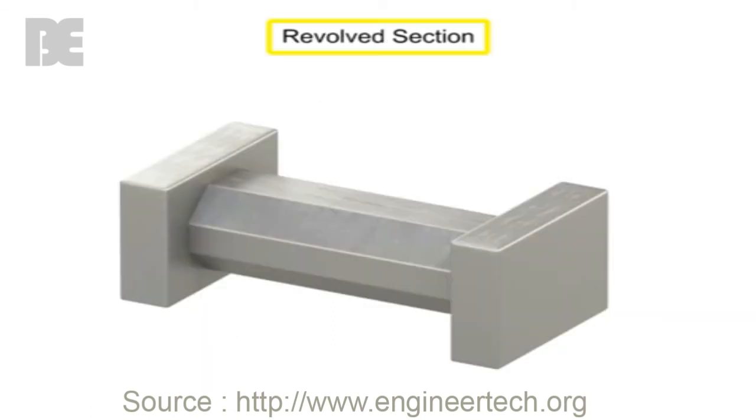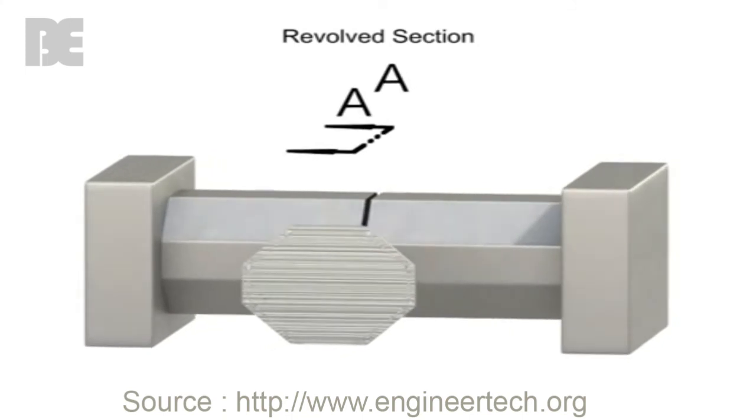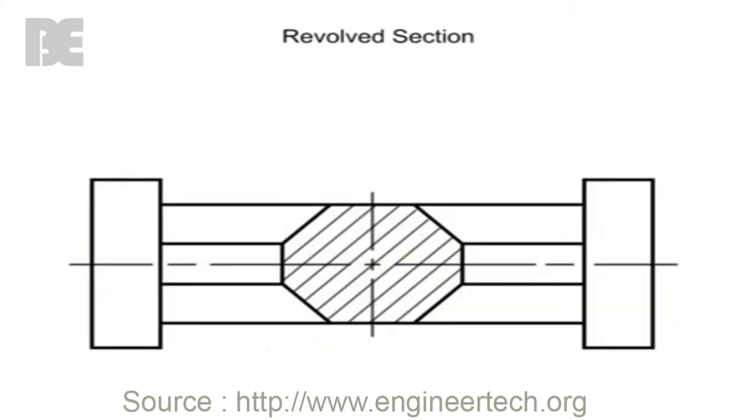A revolved section is created when the cutting plane slices through the feature, but the cut shape is rotated 90 degrees and shown directly on the regular view. Sometimes the new section is shown without breaks and sometimes it is shown with breaks.